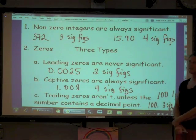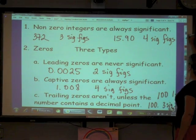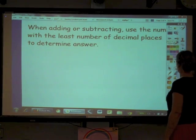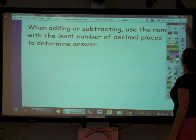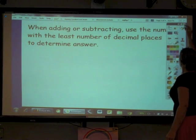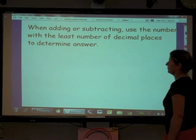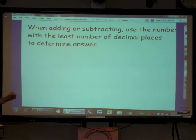Okay, so this is for recognizing how many significant figures are in an actual number. What about in doing calculations? Because that's what we will do most. That's how we're going to use this most of the time. So when you're adding or subtracting, use the number with the least number of decimal places to determine the answer.